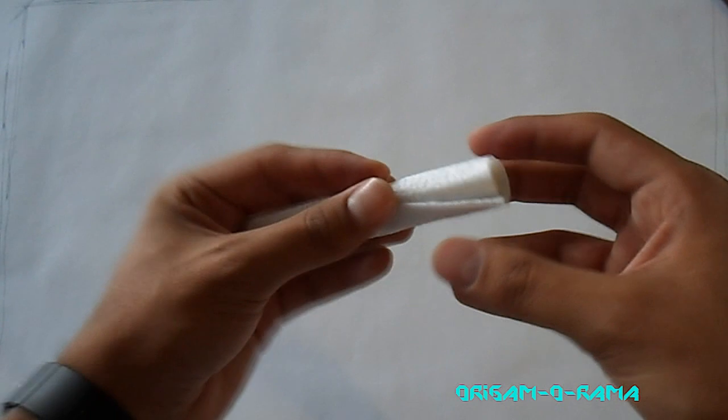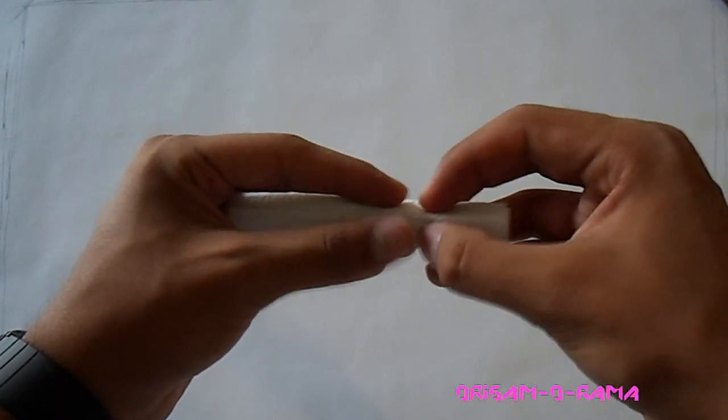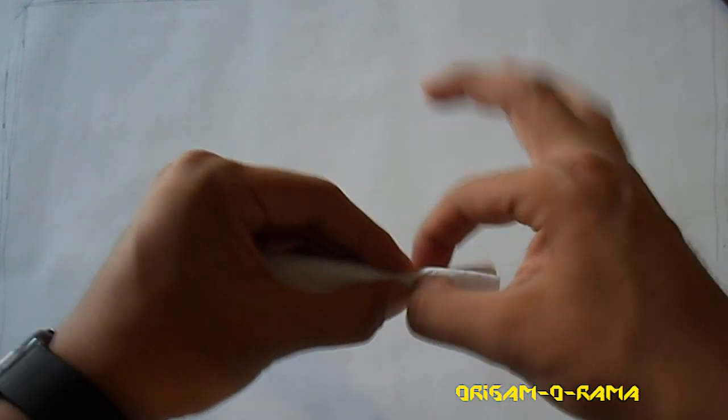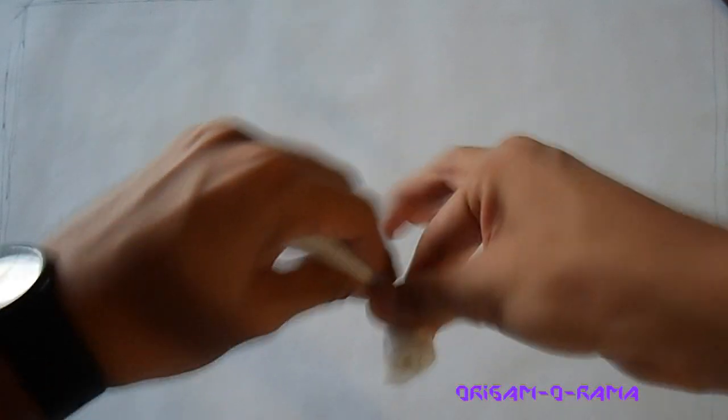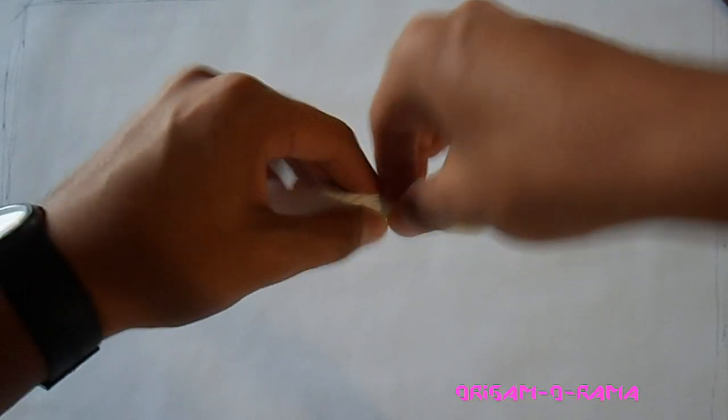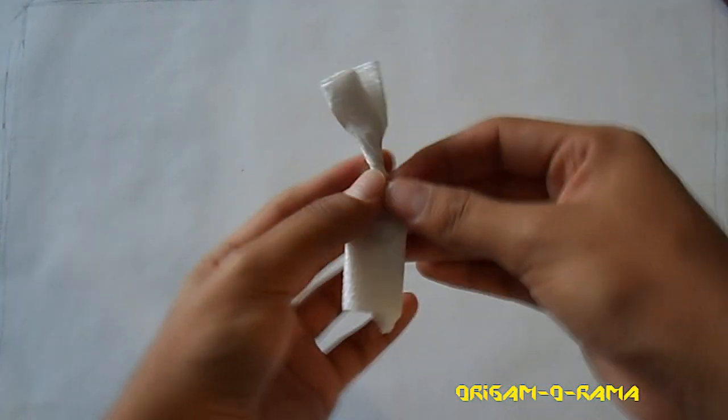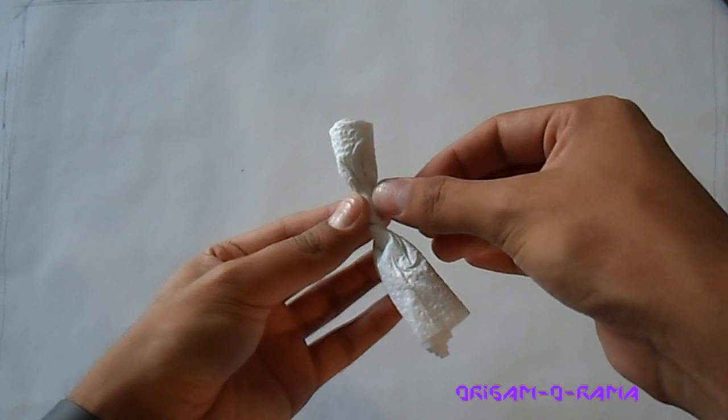Nos va a quedar un poquito abultado y tenemos esto. Más o menos le calculamos un centímetro, un centímetro y medio, para apachurrarle aquí con los cuatro dedos y empezar a girar. Hay que utilizar nada más la punta de los dedos, lo más fuerte que podamos.